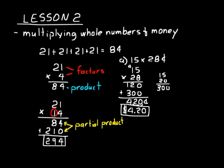Let's try one more: zero times one dollar and fifty-three cents. Any number times zero is zero, so any problem like that, the product will always be zero. Any time you multiply a number by zero, the product is zero.